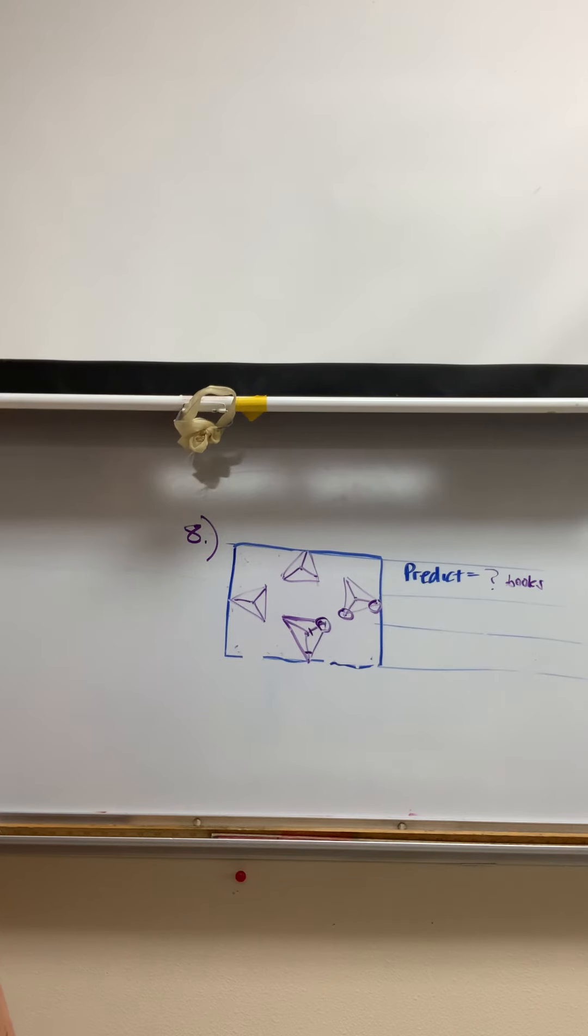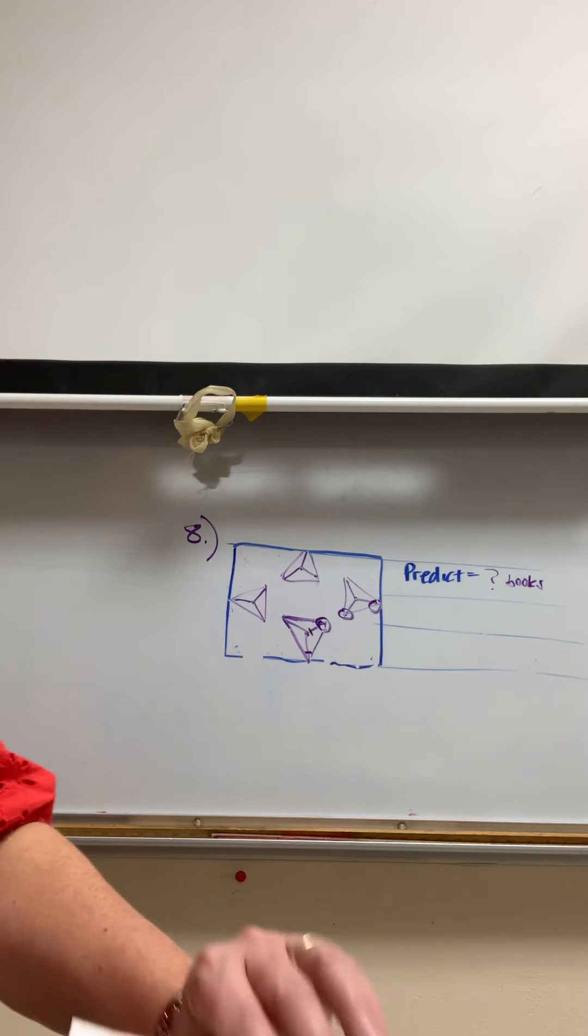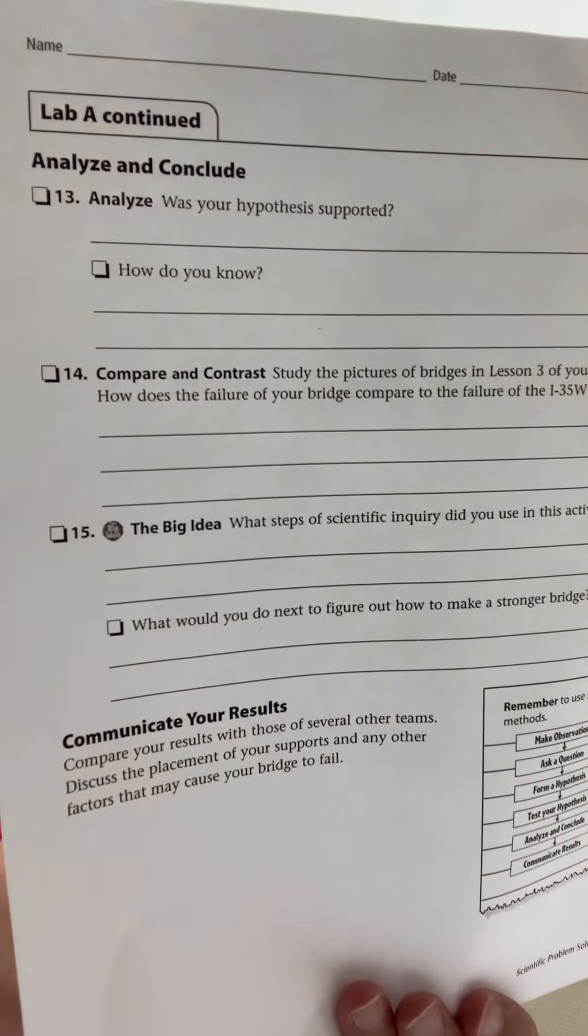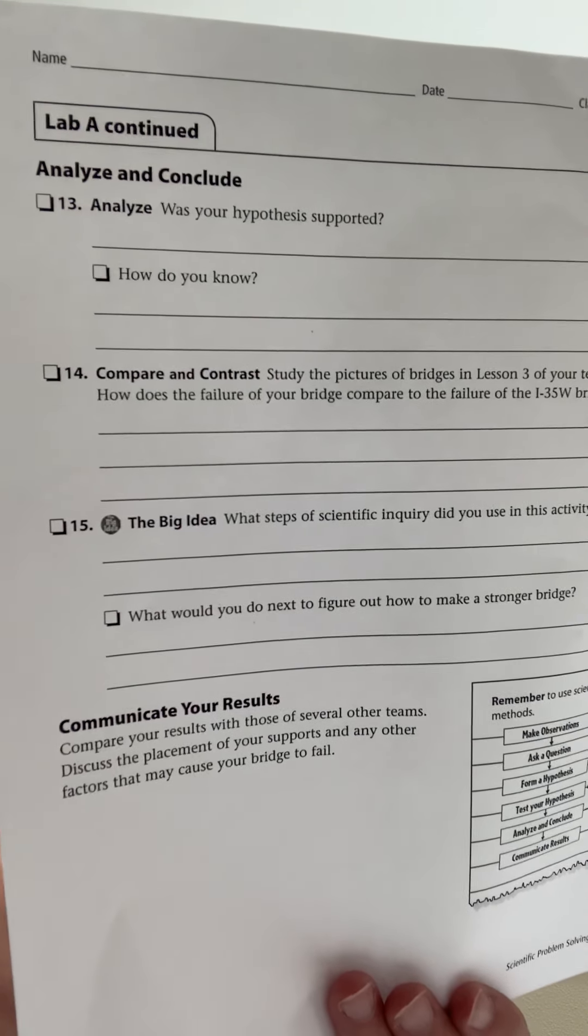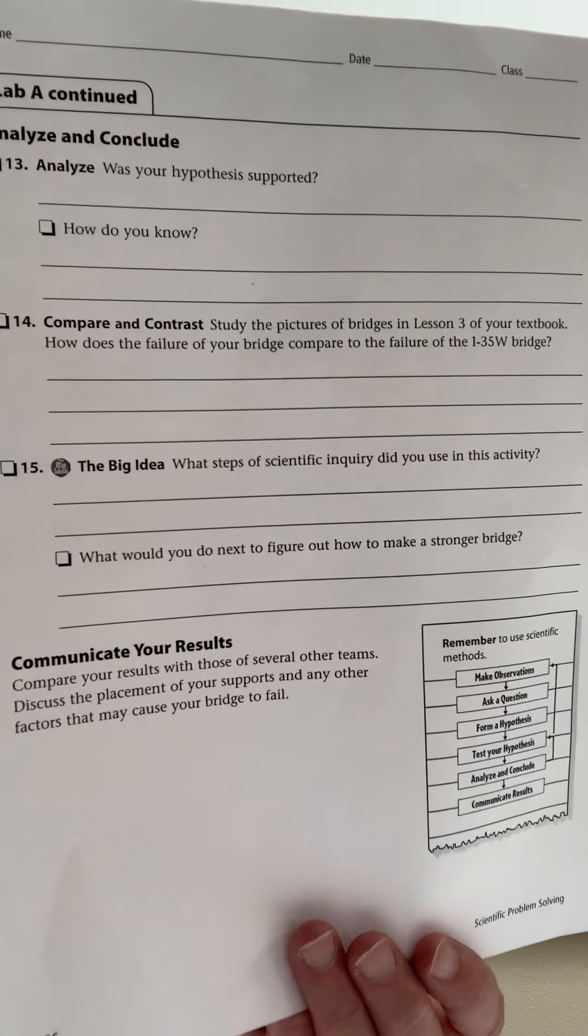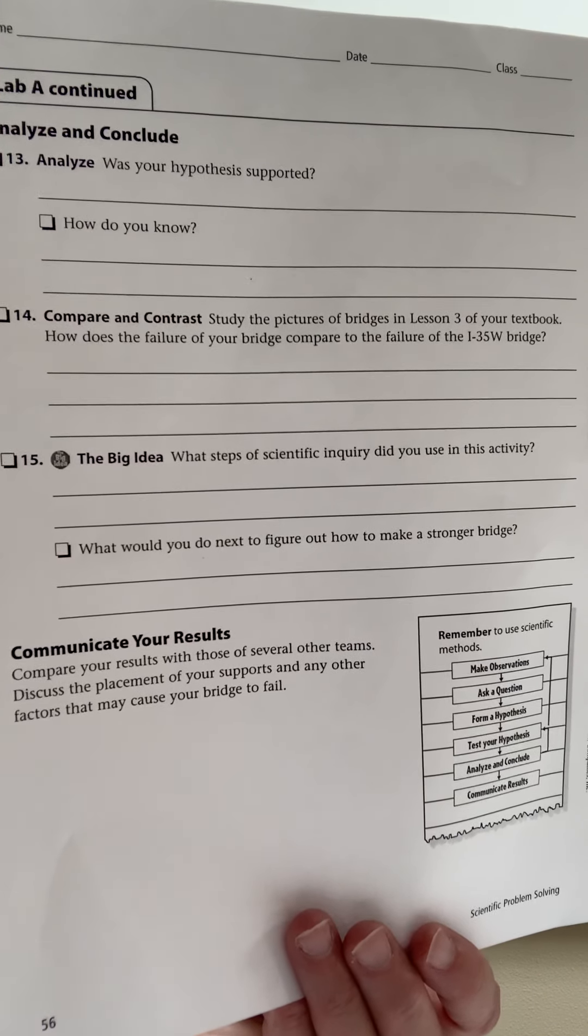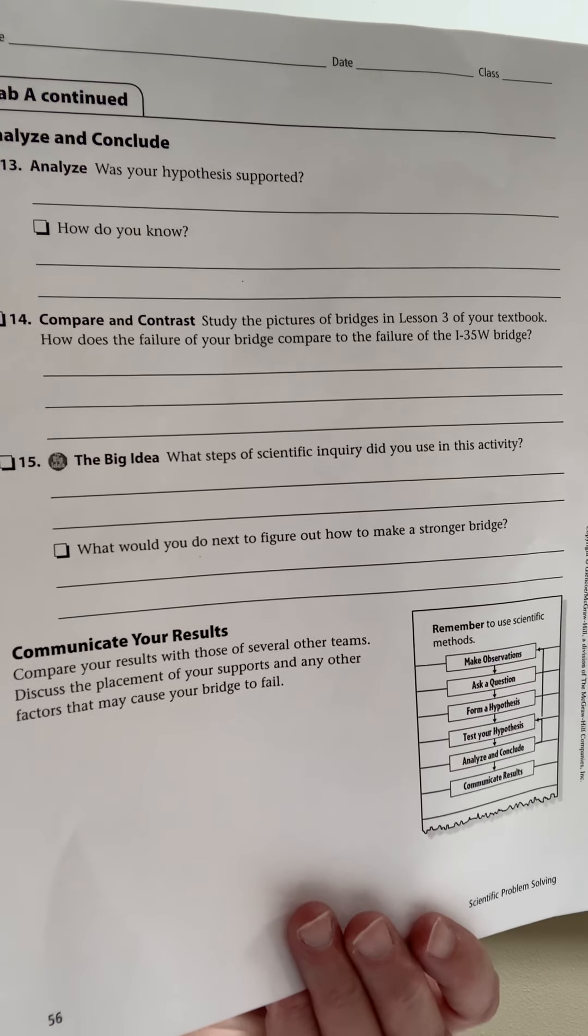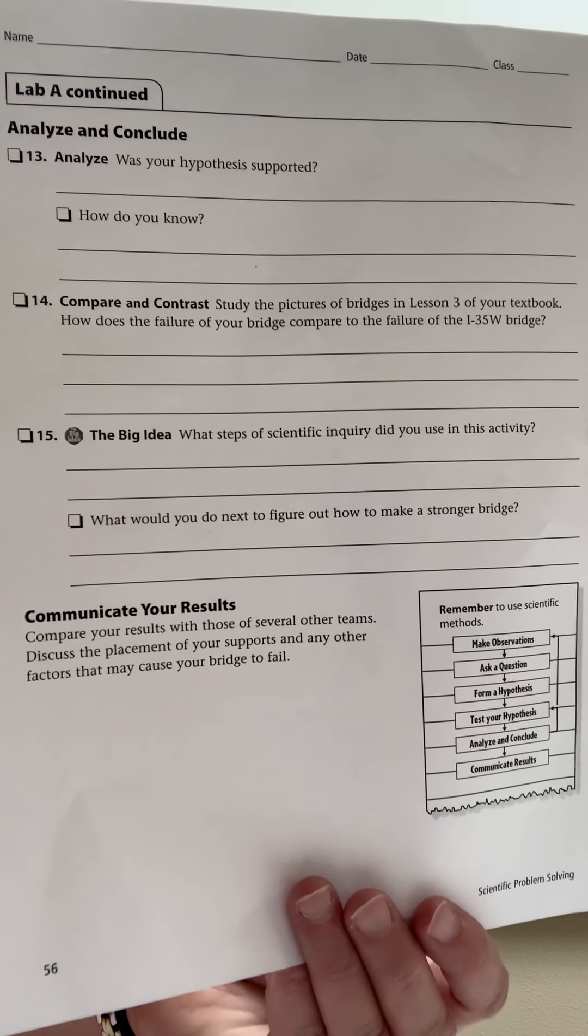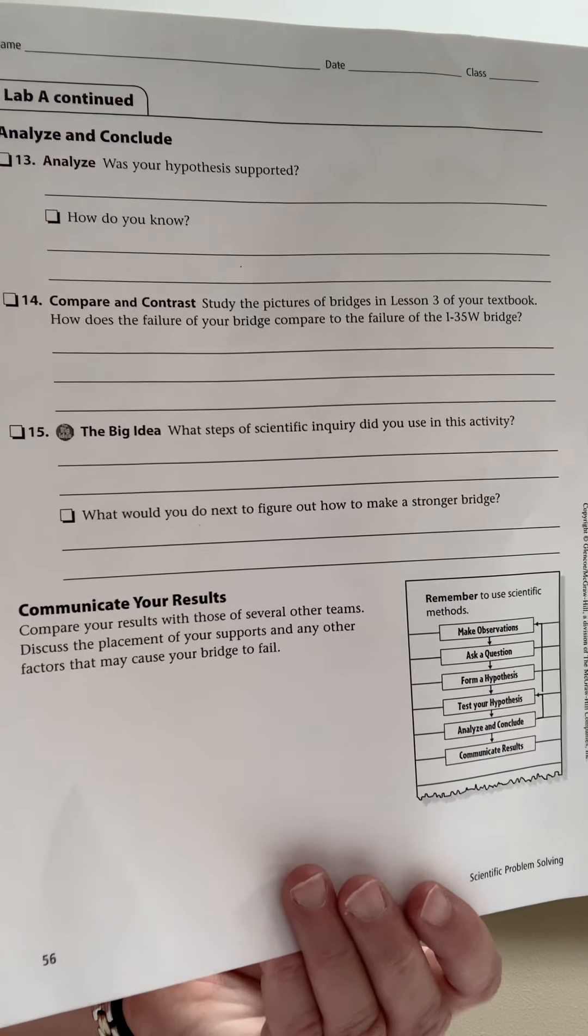Then you have to write whether your hypothesis was correct or not. So on number thirteen, did you predict the right number of weight before it collapsed, and how did you know? Well, basically this is an observation lab, so you can write observation or you observed it.